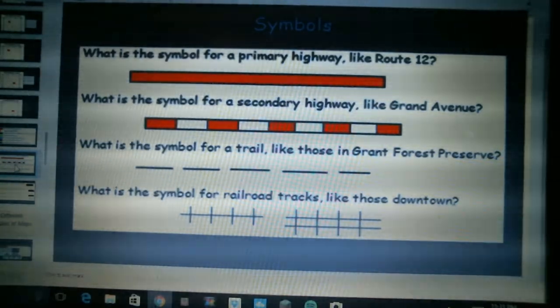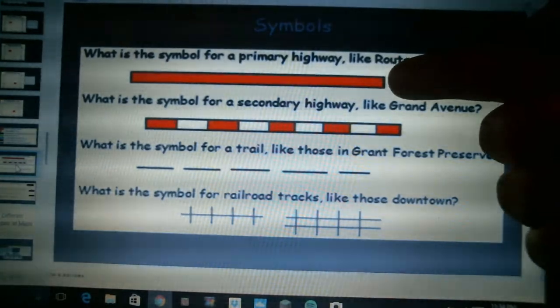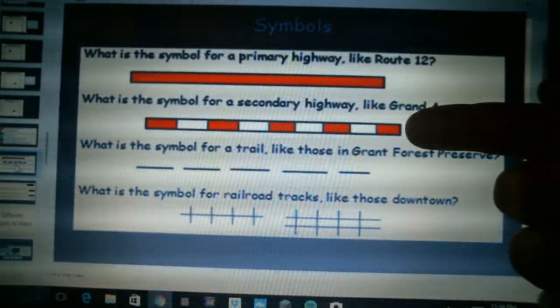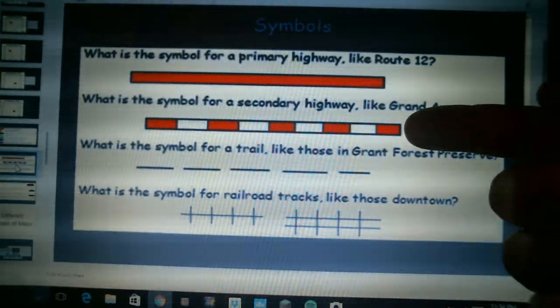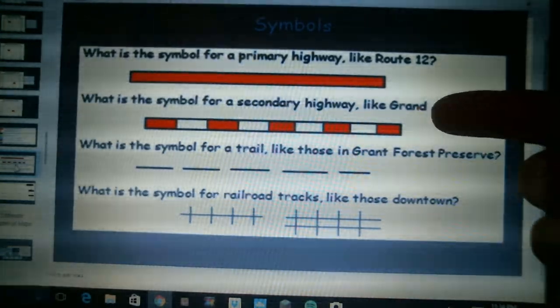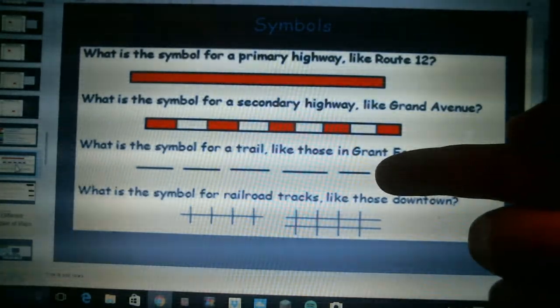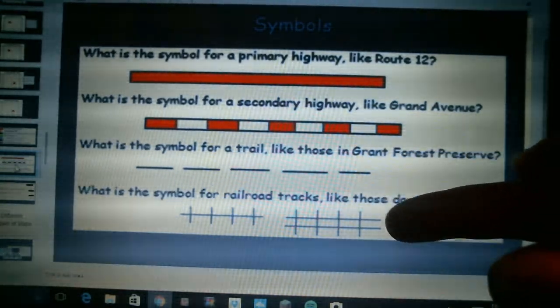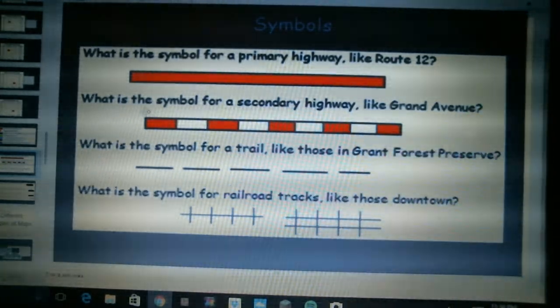Okay, once again a primary highway like Route 12 is going to be the red line solid. A secondary highway, a smaller road like a county road like Grand Avenue, it's going to be alternating red and white. A trail like those in Grant Forest Preserve will be a dotted line. Railroad tracks are going to be horizontal lines with crisscrosses.